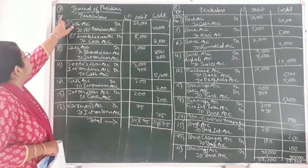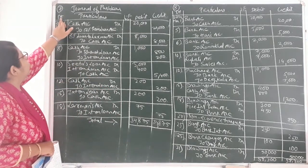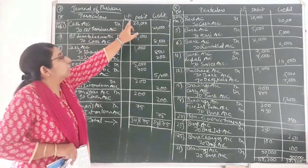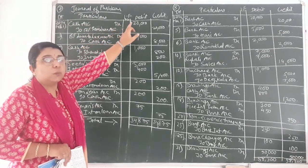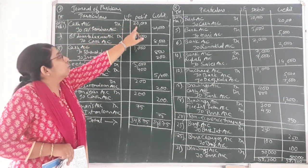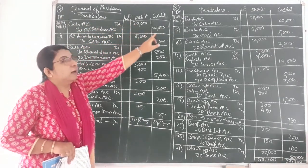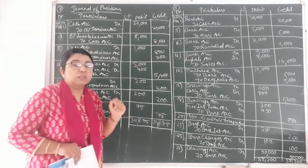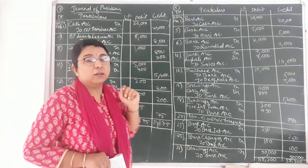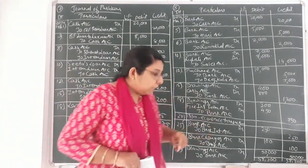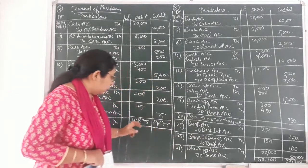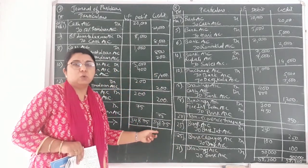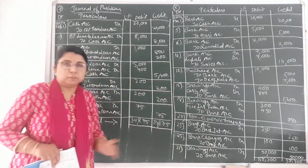Revising: the first column is date, second is particulars, LF number that is ledger folio number, then debit and credit. It has been discussed that always the debit and credit value would be equal, and the total at the end of all the entries would also come equal.